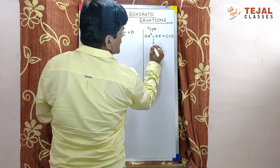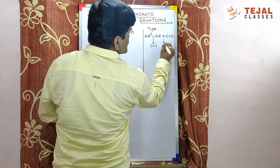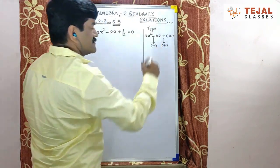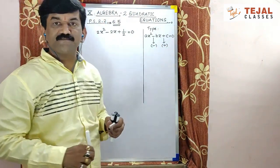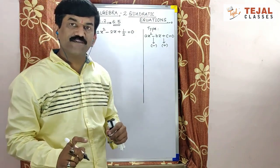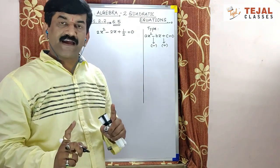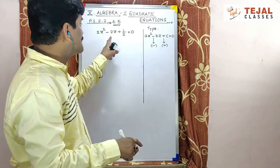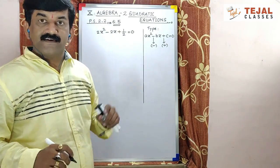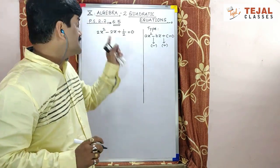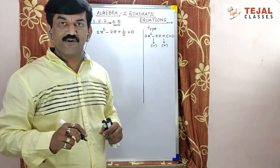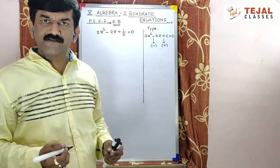Yaha pe kaunsa sign hai? Minus. Yaha pe kaunsa sign hai? Plus. Ye last term agar plus hai, matlab aise 2 factors chahiye hai. Un factors ka addition middle term ke equal hona chahiye hai. Ye, bahut student ye question ko LCM leke bhi solve karte hai. Aap direct bhi solve kar sakte ho. Kaisi? Watch it carefully.